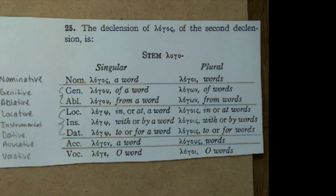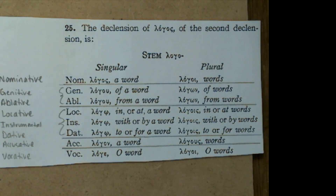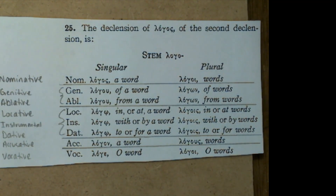So here we have the eight-case system. What is a case? In English, the language uses the order of words primarily to denote meaning. For example, the subject is usually listed first, followed by the verb, and then you have your direct object and/or indirect object.